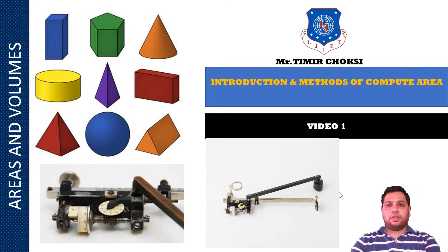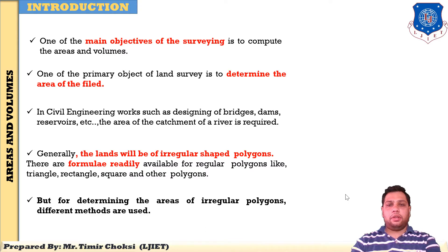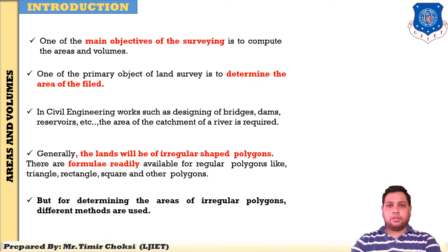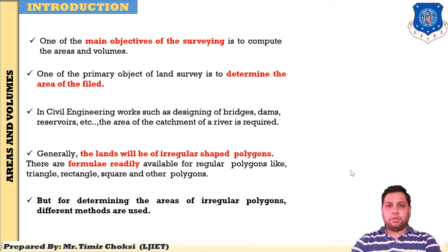Students, you have studied different types of survey in previous sessions — like plane table survey, theodolite survey, and tachometer survey. After all those surveys, our main goal is to find the area of a particular field and the volume of a particular field. In this session I will focus only on area, and after session number four I will cover volume.